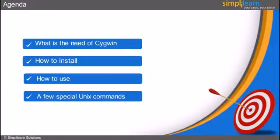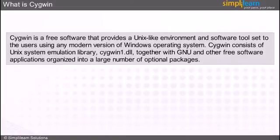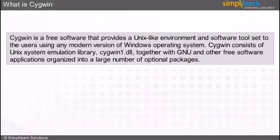Cygwin is a free software that provides a Unix-like environment. It is a software tool set for users using any modern version of the Windows operating system. Cygwin consists of a Unix system emulation library, Cygwin1.dll, together with a vast set of GNU — genuinely not Unix — and other free software applications organized into a large number of optional packages.